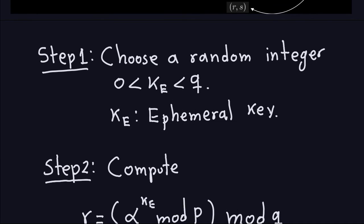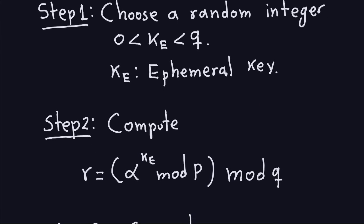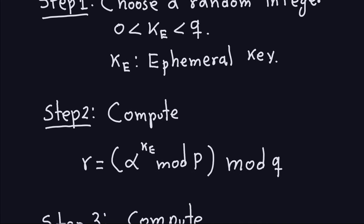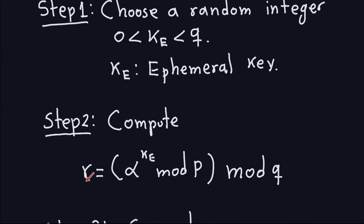Step number two is to do a double modular exponentiation: you take the generator Alpha to the ephemeral key chosen in step one, compute that modulo P (the large prime), and then take the result modulo the small prime Q. This modular exponentiation gives you R, which is the first part of the signature.